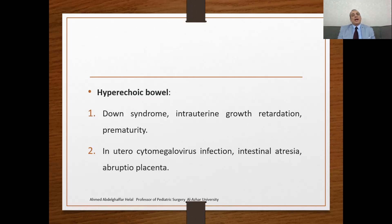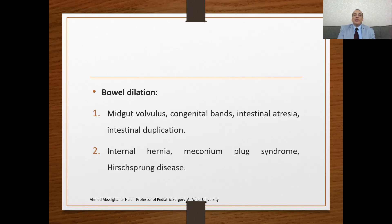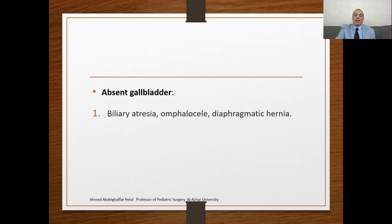Surprisingly, this finding is not absolutely related to meconium ileus. Hyperechoic bowel may be seen in Down syndrome, intrauterine growth retardation, prematurity, in utero cytomegalovirus infection, and intestinal atresia — so it is not specific and sensitive for the detection of meconium ileus. Moreover, bowel dilatation may be seen in cases of mid-gut volvulus, congenital bands, intestinal atresia, internal hernia, meconium plug syndrome, and Hirschsprung disease. Furthermore, absent gallbladder may be related to biliary atresia, certain diaphragmatic hernia, or chromosomal abnormalities.